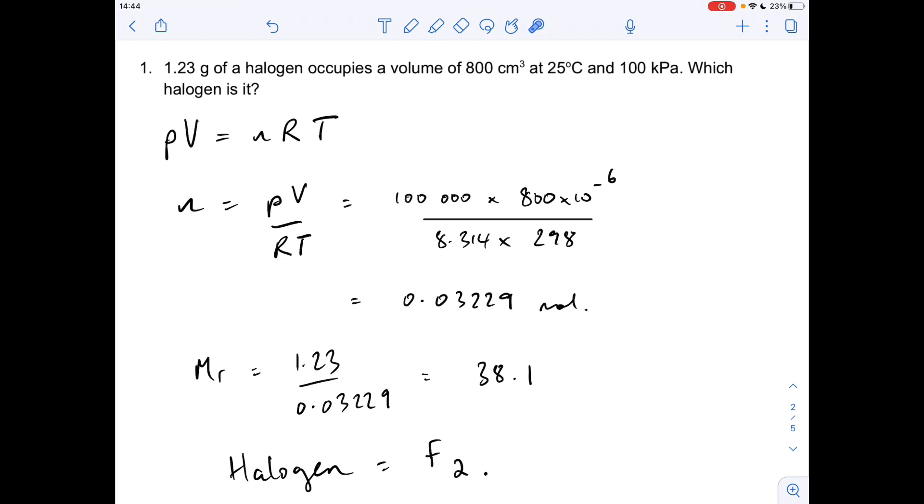So rearranging for moles becomes PV over RT, and then we'll put the numbers in, just be careful with your units. So pressure has to be in pascals for the gas equation, so 100 kilopascals is 100,000 pascals. Volume has to be in cubic metres, we've been given it in cubic centimetres, so we just stick a 10 to the minus 6 after the number, and put cm cubed straight into metres cubed. So effectively you're dividing by a million there.